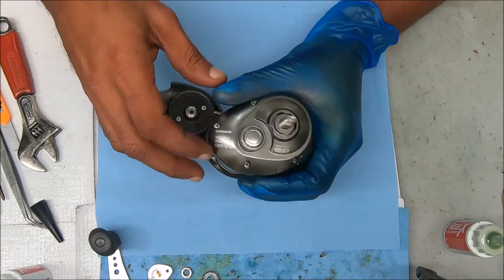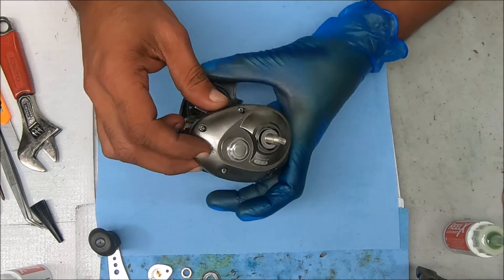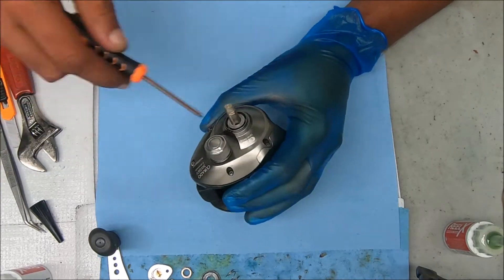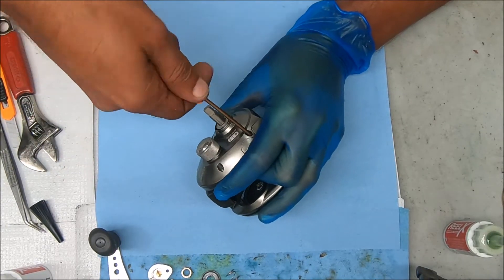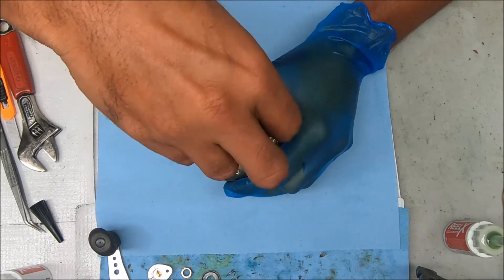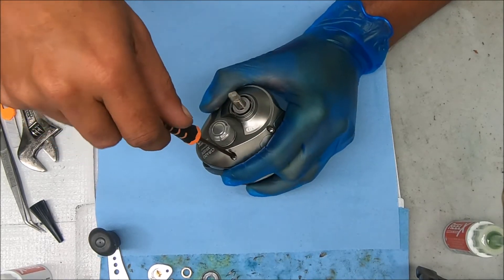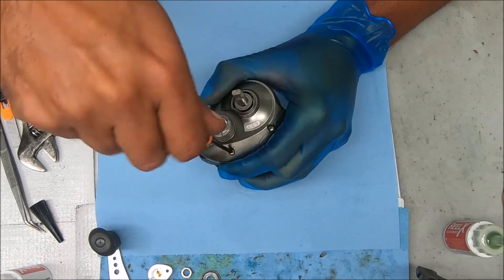Now we have four screws on the outside to remove to get that side cover off. And I'm sure that these are different sizes so you want to pay attention to where they came from.